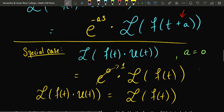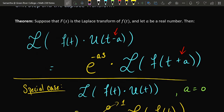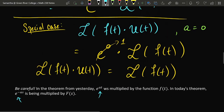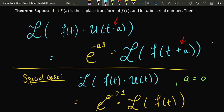This theorem bears some similarity to the one introduced yesterday. Yesterday, we were taking the Laplace transform of an exponential multiplied by our original function. In yesterday's theorem, the variable on the exponential was t because the exponential was being multiplied by something where the Laplace transform had not yet been applied. In this theorem, our exponential is in terms of the variable s because the exponential is being multiplied by something to which the Laplace transform has already been applied.